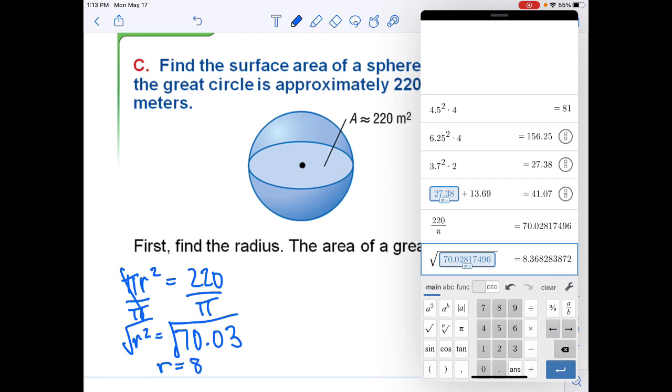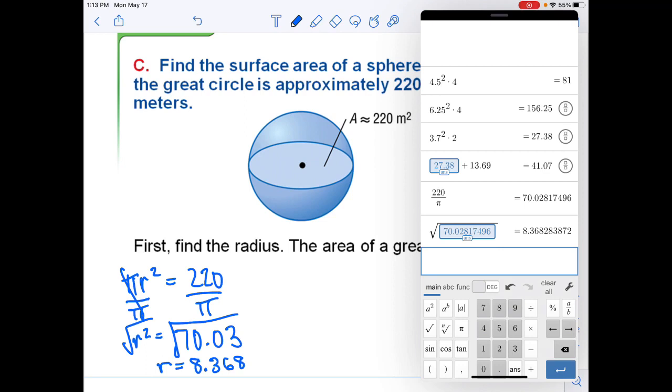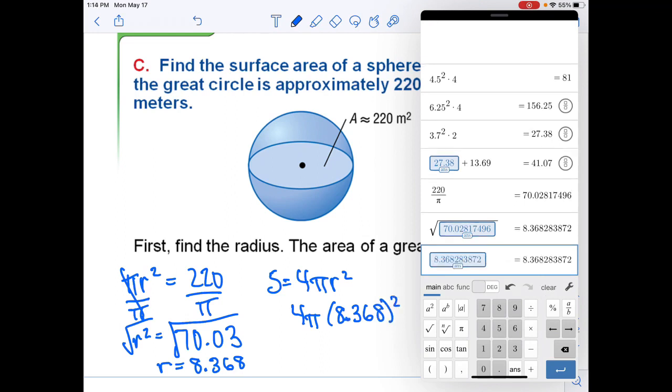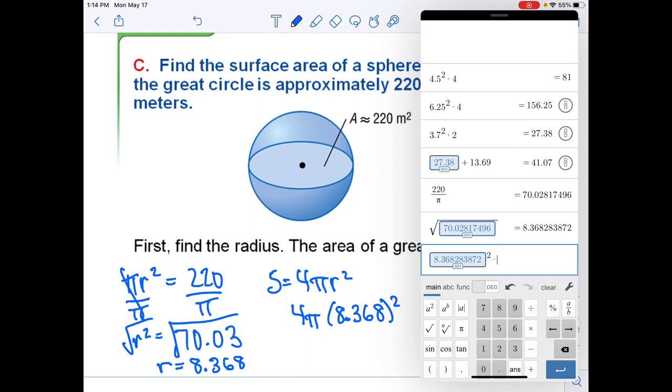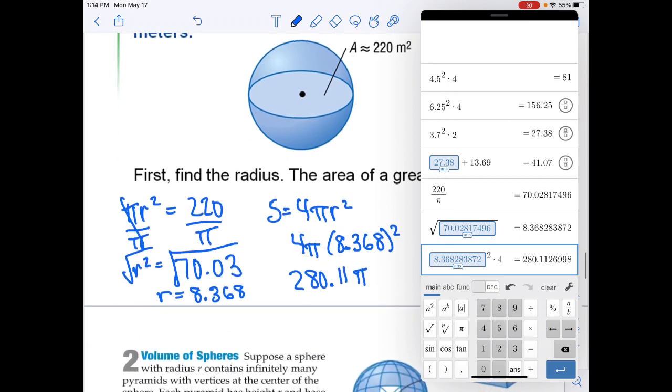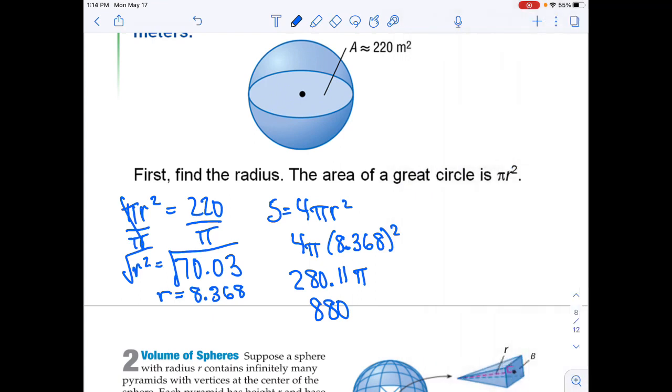We have our radius is equal to 8.368. And then we can go ahead and plug that in. I'm not going to actually round. I'm going to use my exact decimal that I have here. So I end up getting 280.11π. I want to show you guys something real quick. These are both good answers for our surface area.